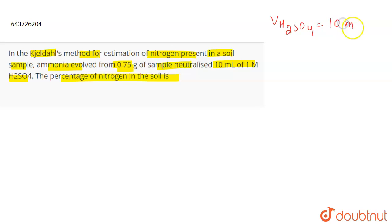And the weight of the sample, or you can say the mass of the sample, is given to you as 0.75 grams. You have to find out the percentage of nitrogen.